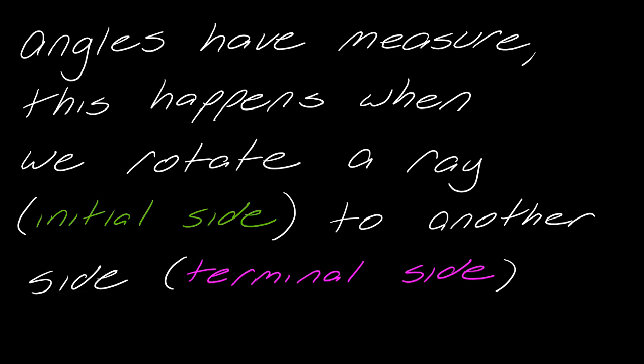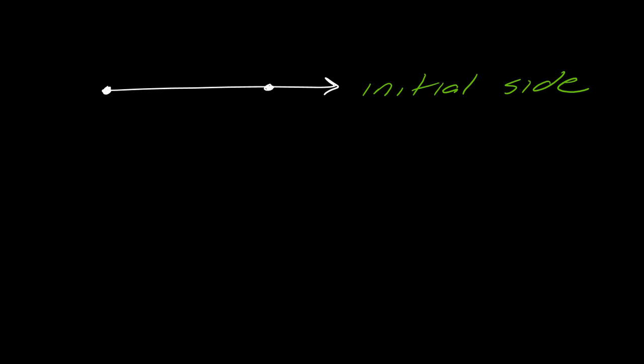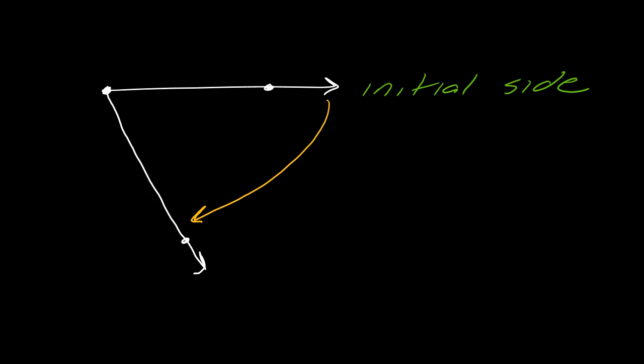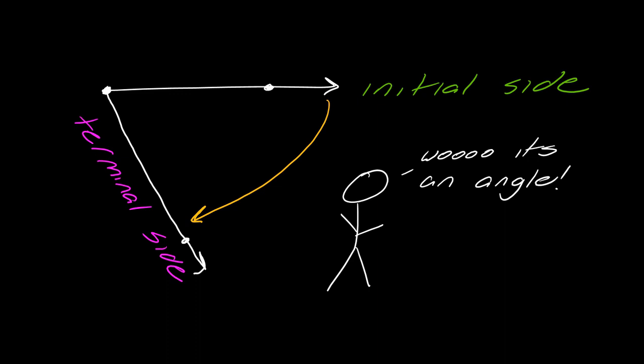So let me just show you what that looks like. I've got my ray and then what I'm going to do is I'm going to swing it like this. And so this side here, this starting ray, this is the initial side. I swing it out and then I get this other ray, and so this is what's known as the terminal side. That is what makes an angle.